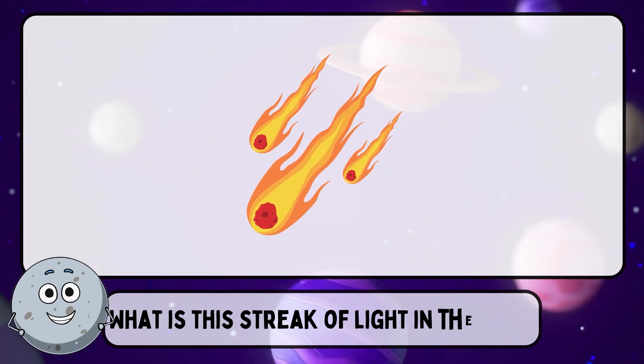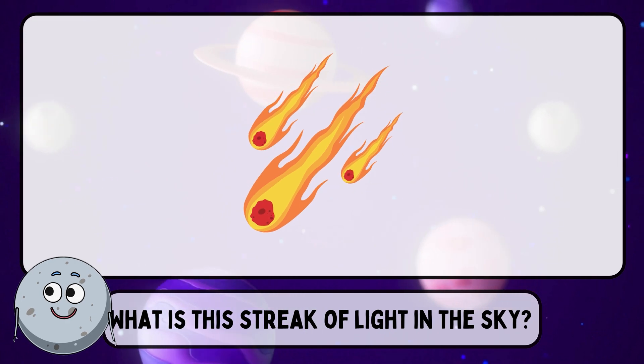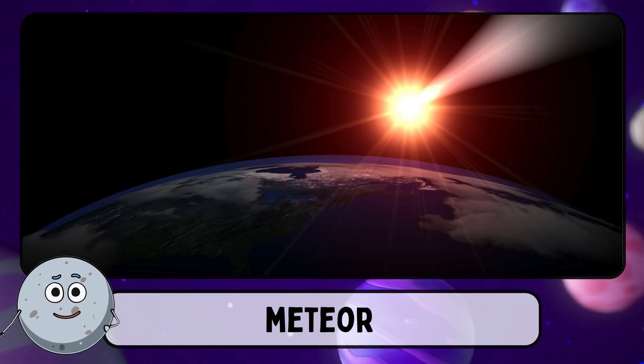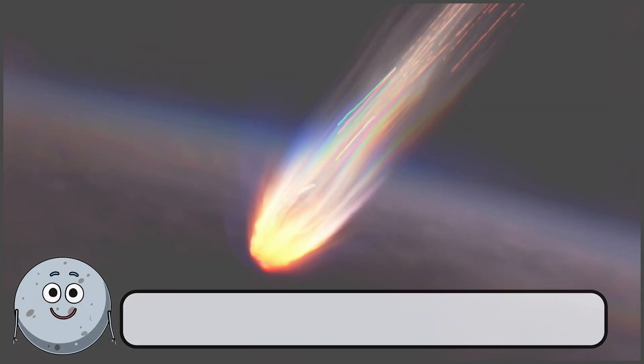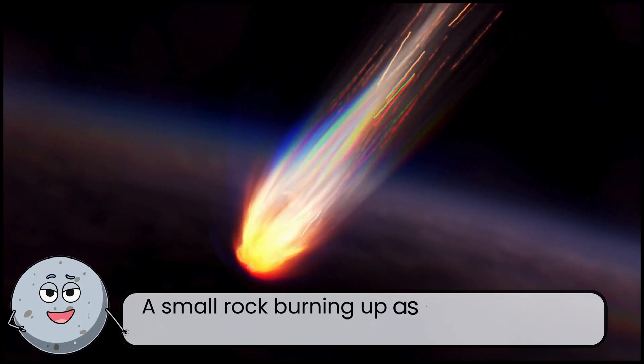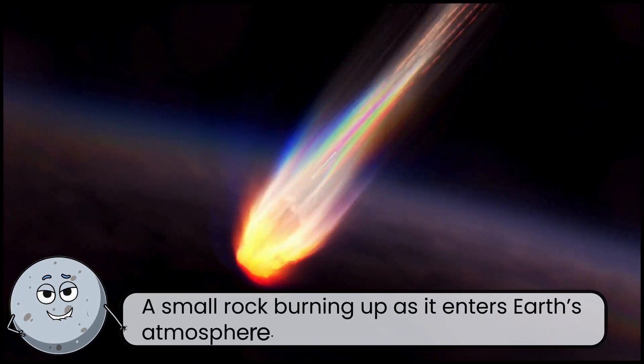What is this streak of light in the sky? This is a meteor. A small rock burning up as it enters Earth's atmosphere.